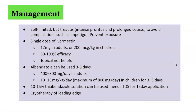Although cutaneous larva migrans is a self-limited condition, the intense pruritus and prolonged course often necessitate treatment. Ivermectin can be used as a single dose — 12 mg in adults or 200 micrograms per kilogram in children — with a reported 80–100% efficacy. The oral form is helpful, but the topical form does not appear to be helpful. An alternative agent is albendazole, used for 3–5 days at 400–800 mg per day in adults, or 10–15 mg per kilogram per day in children, with a maximum of 800 mg per day.